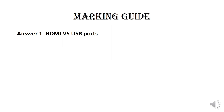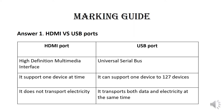Answers. The difference between HDMI and USB ports is summarized in the following table. HDMI means High Definition Multimedia Interface, while USB means Universal Serial Bus. HDMI port supports one device at a time, but USB port can support one to 127 devices. HDMI port does not transport electricity, while USB port transports both data and electricity at the same time.